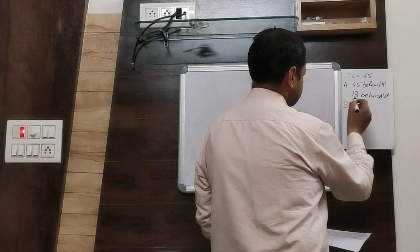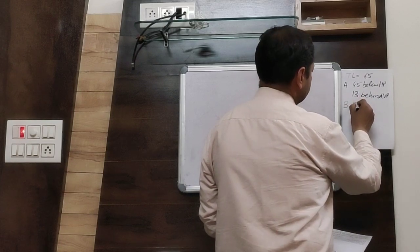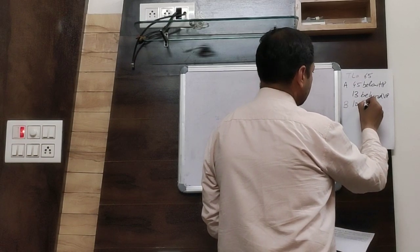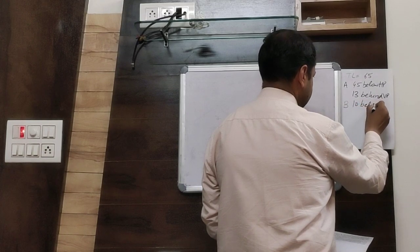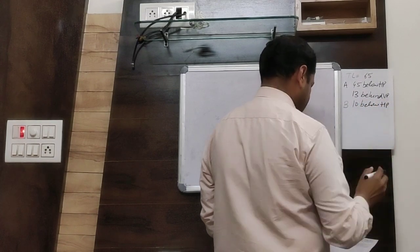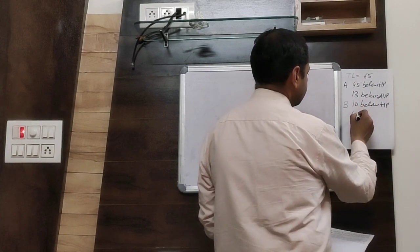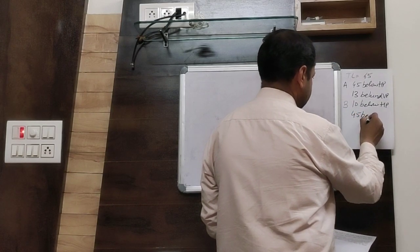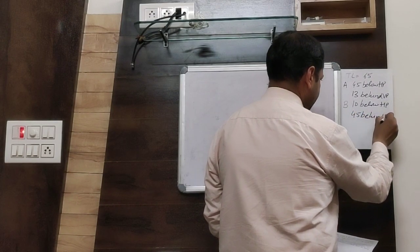Point B is 10mm below HP and 45mm behind VP. And in the question, you have to draw the projections.